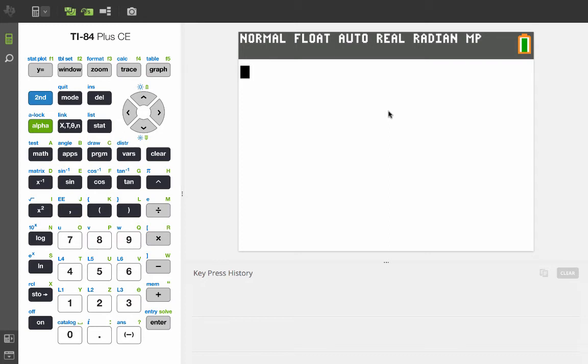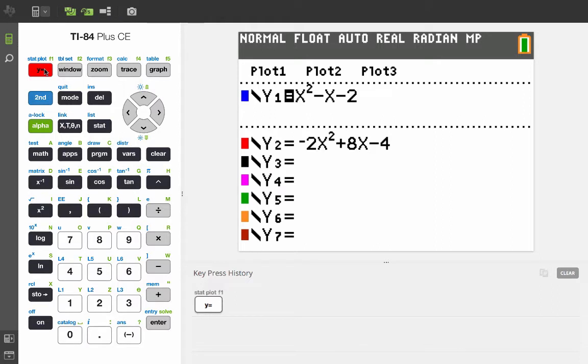This video will explain how to find the zeros and the vertex of a parabola. We're going to be using two different functions this time. First, we're going to be using y equals x squared minus x minus 2. So let's take a look at what that graph looks like.